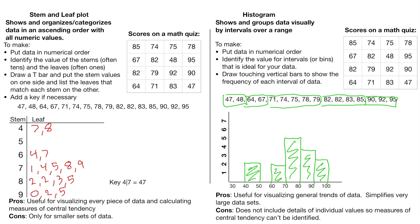And we can kind of see the main kind of values. We can see what was most common and that kind of thing. So the pros and cons, which I already accidentally put up, are your pros for a stem and leaf. It's useful for visualizing every piece of data. You can also calculate measures of central tendency in this.